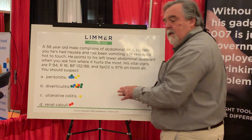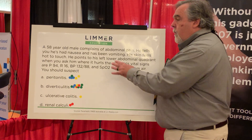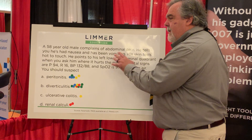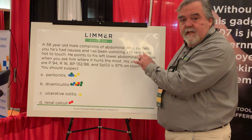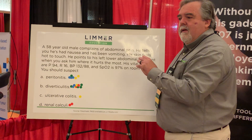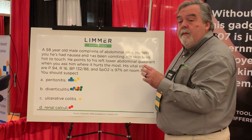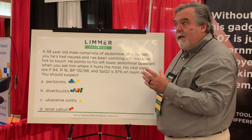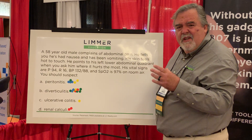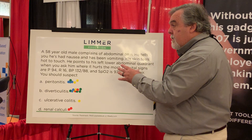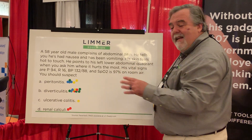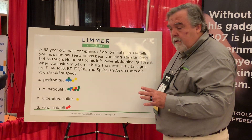Ulcerative colitis — while we can have some of these signs and symptoms, there are things missing from the stem: diarrhea, maybe bloody diarrhea, some pus — really things like that. So that's not there either.